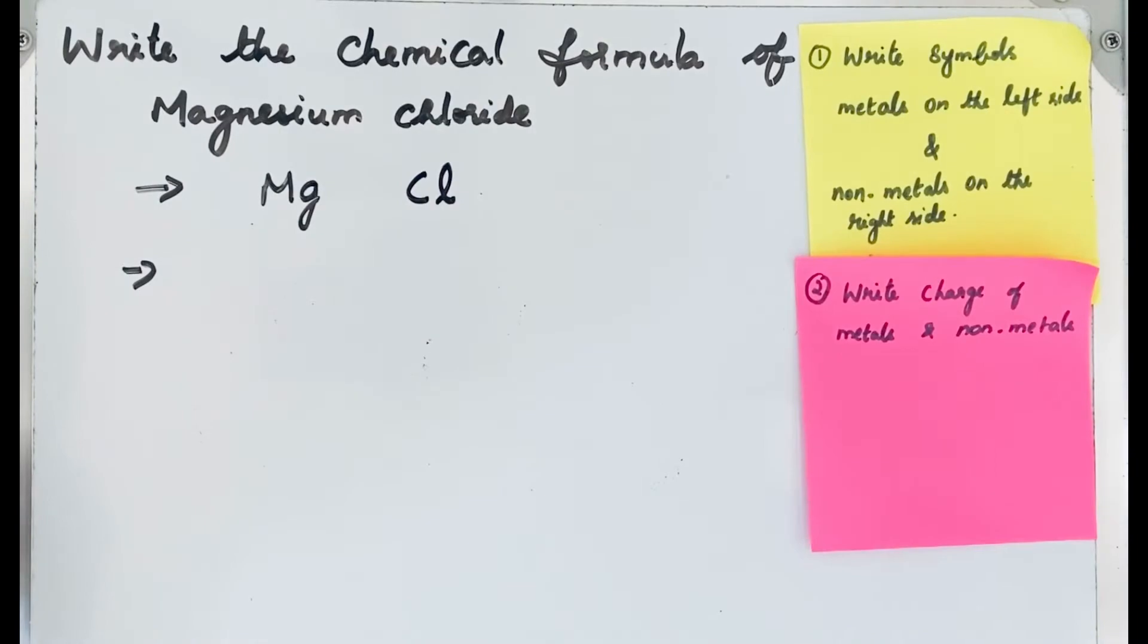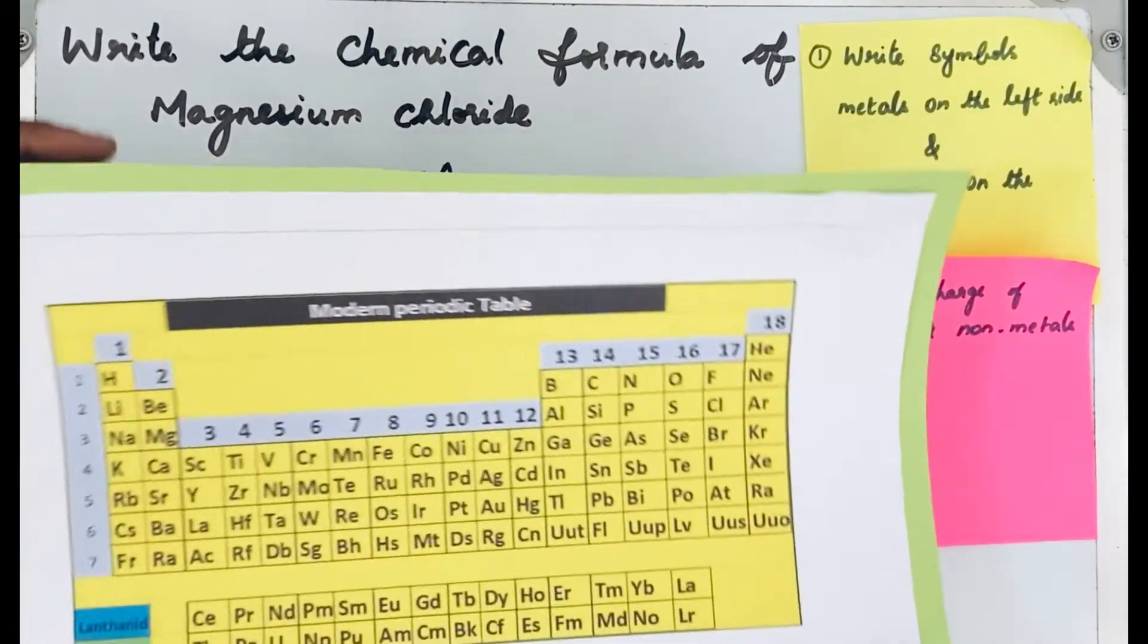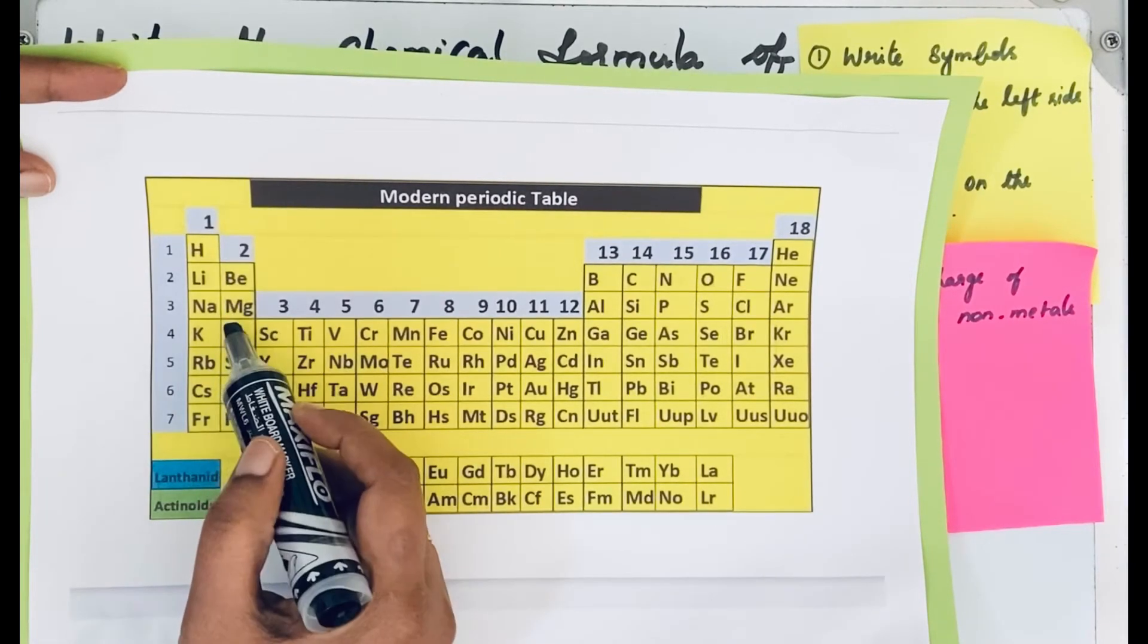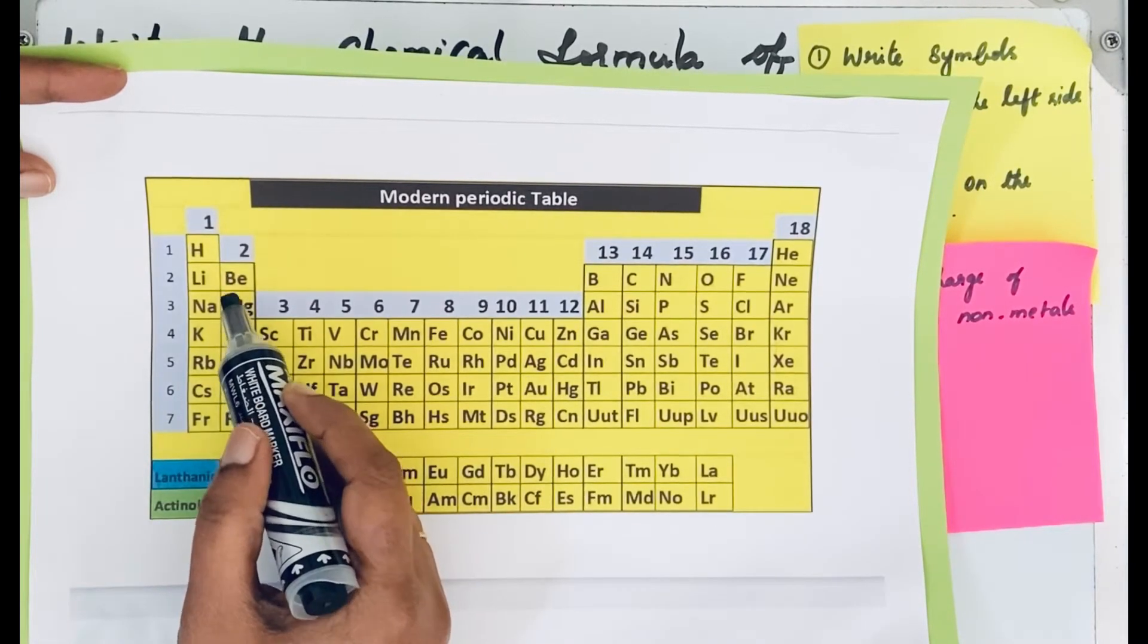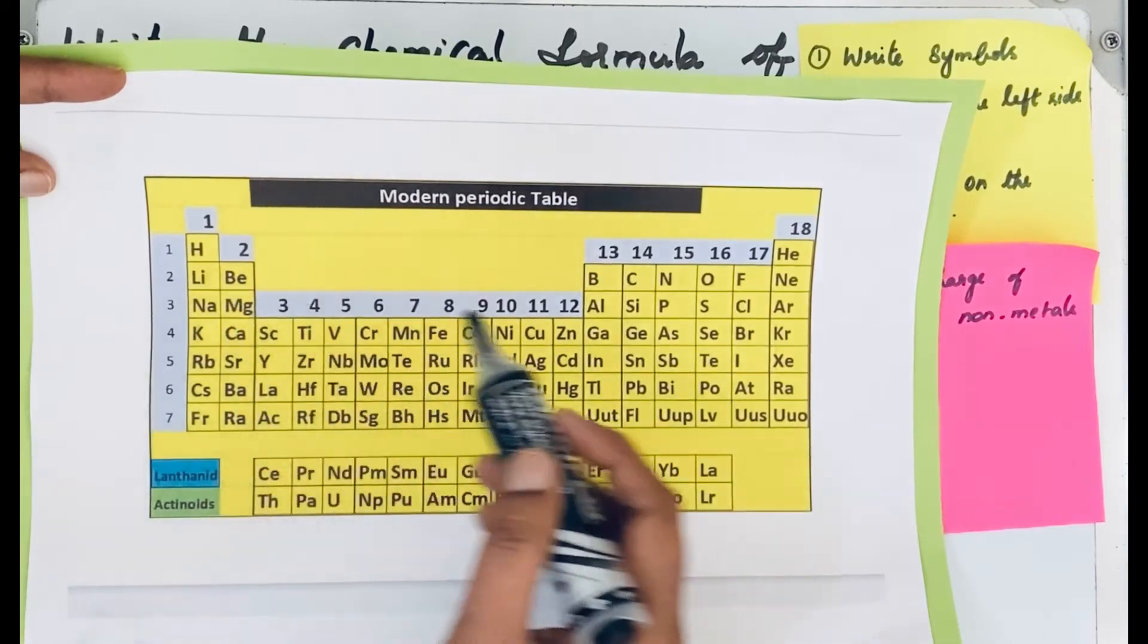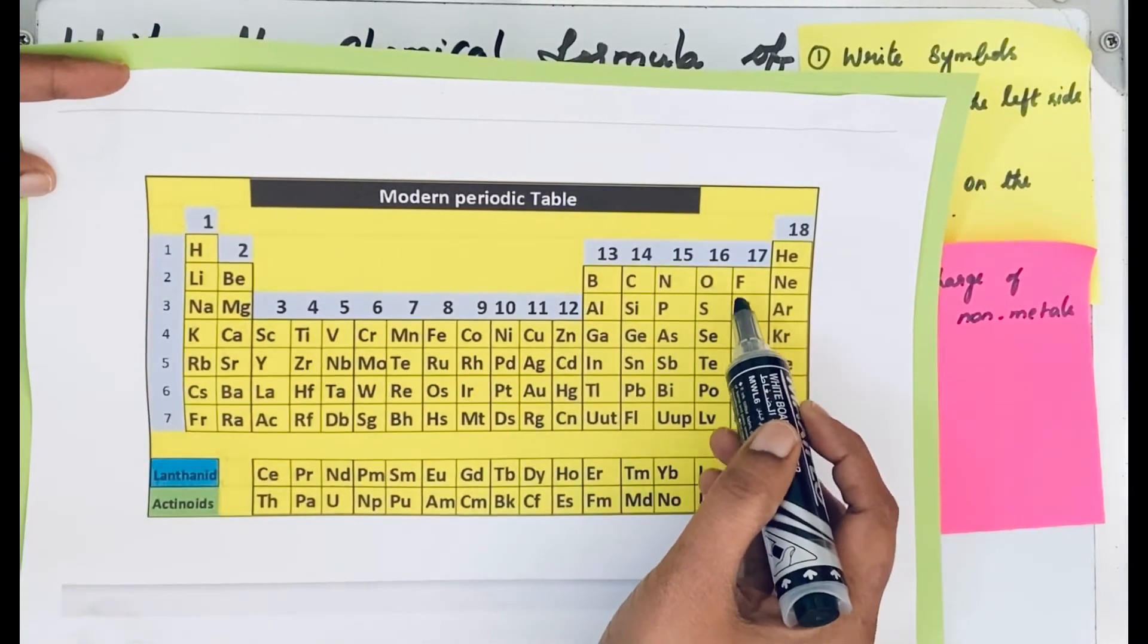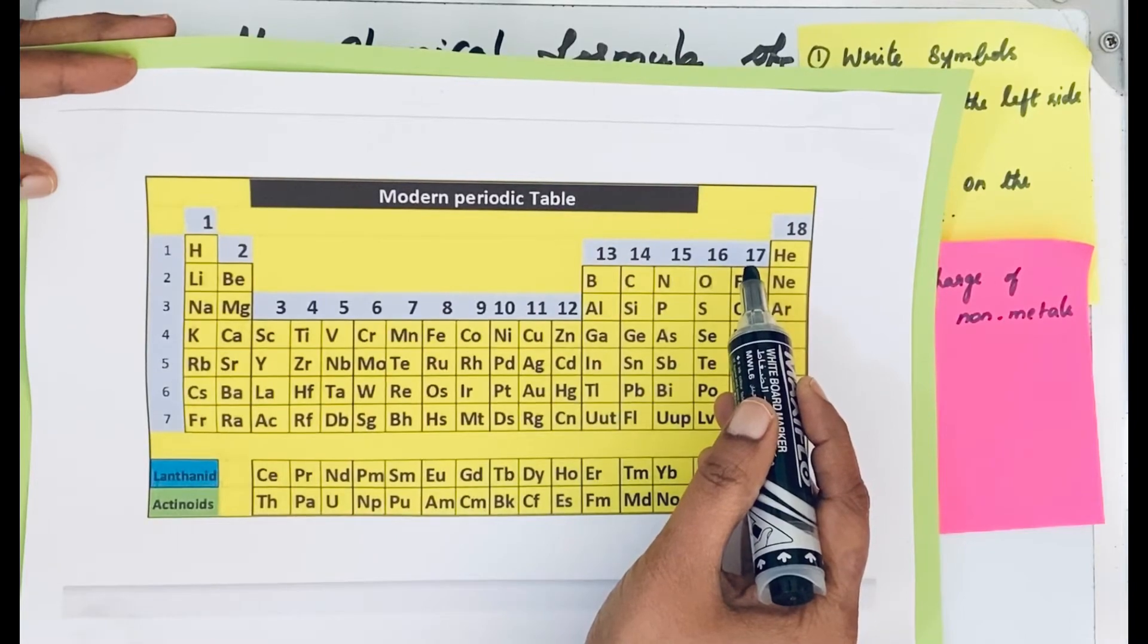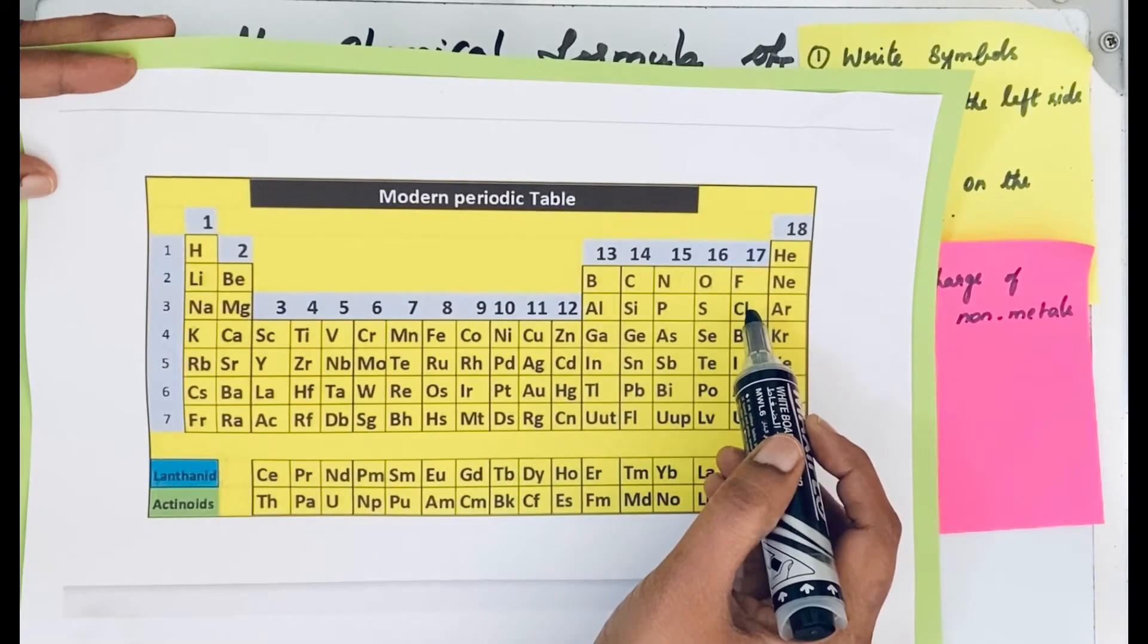Again, for this periodic table, magnesium is in the second group, so the charge is 2+. Then see the chloride ion, the group number is 17, so it produces the charge of -1.